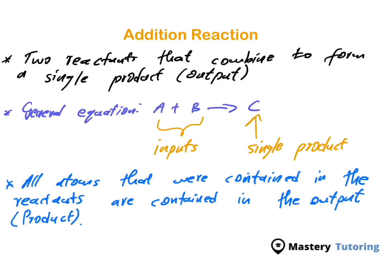This simply means that there will never be a situation where you start with ten atoms in the reactants and then end up with fifteen atoms or five atoms in the output. Whatever number of atoms you start with, you're going to have as your product.